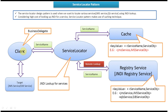Now suppose the client asks for the JMSService object again. It passes JMSService — the service name — to the Service Locator. This time, the Service Locator checks the cache and the JMSService object is available. So it retrieves the JMSService object directly from the cache and returns it to the client. This way, the Service Locator avoids doing a remote lookup in the JNDI Registry. Since this remote lookup is a costly operation, by caching the service object we can avoid it and improve performance.